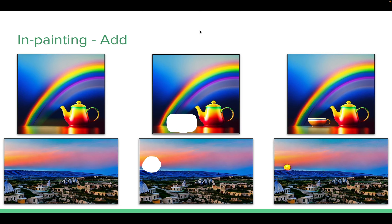Similarly, we can make additions to an image. For example, here we want to add a saucer to a particular image. We create a mask where we want to add the saucer, modify the prompt, click generate, and it produces the same image with the masked area now containing the added saucer.